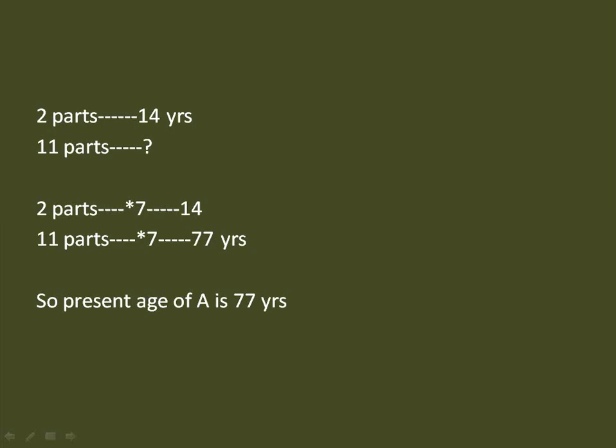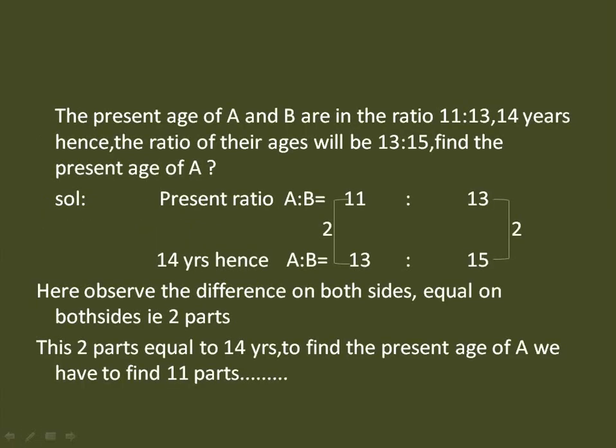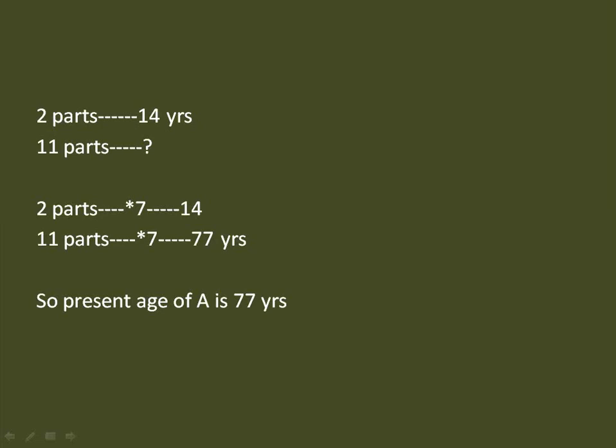Now find the present age of B. The present ratio of A and B is 11:13, and 14 years hence it is 13:15. The difference on both sides is equal to 2. This increase happened due to 14 years, so two parts equal 14 years. To find the present age of B we need 13 parts. The relation between 2 and 14 is ×7, so 13 parts are 13 × 7 = 91 years.